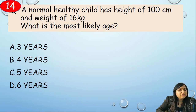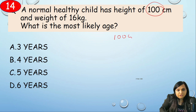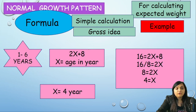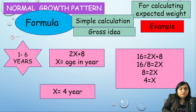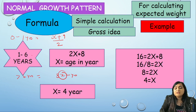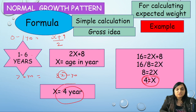Increase in height in the first year expressed as a percentage: options 40%, 50%, or 60%? We know the gain is 25 cm from a base of 50 cm, so 25/50 × 100 = 50%. Next: a healthy child has height 100 cm and weight 16 kg — most likely age? 100 cm = 4 years. Counter-checking with weight using formula: between 1–6 years, weight = 2X + 8. So 2X + 8 = 16, giving X = 4 years. Correct answer: option B, 4 years.